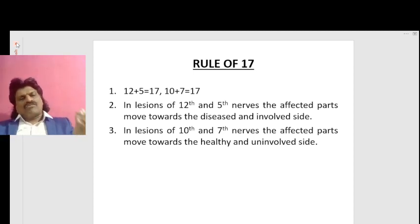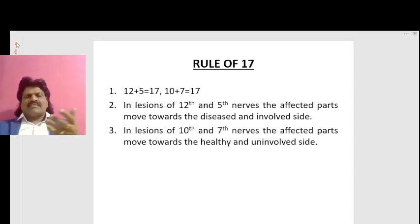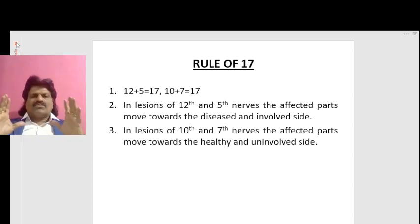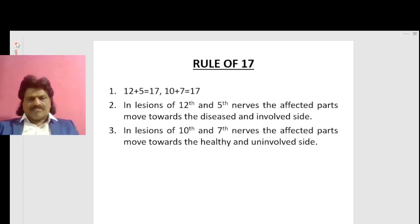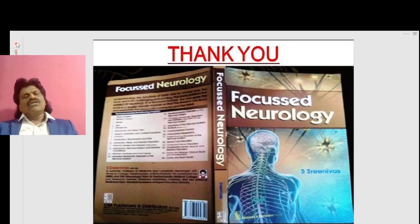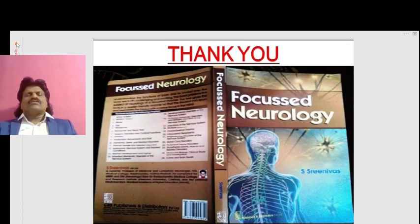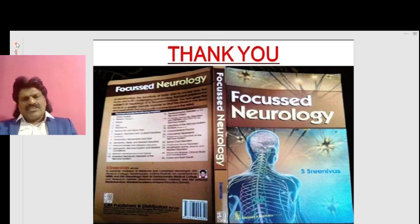12 plus 5 is 17, and 10 plus 7 is also 17. If you remember this Rule of 17, it is very easy to remember all the types of movements when the 12th, 5th, 10th, and 7th nerves are affected. These are the interesting concepts of the Rule of 17.